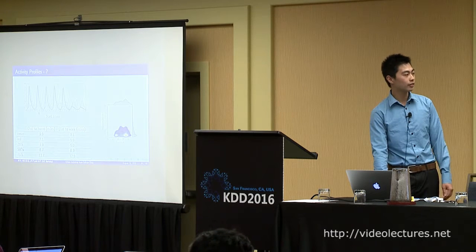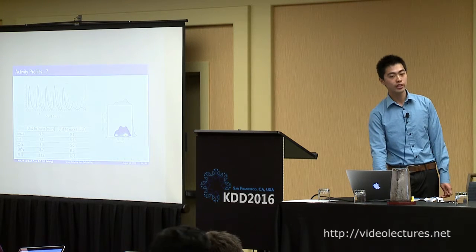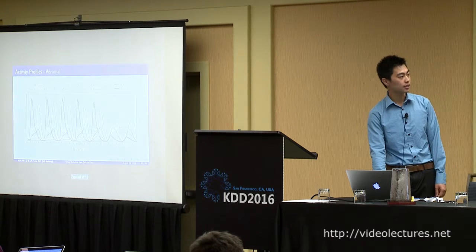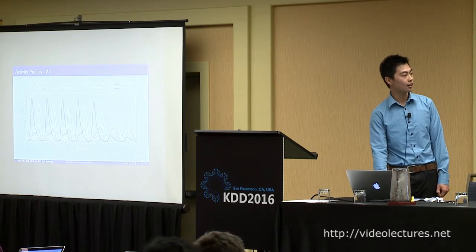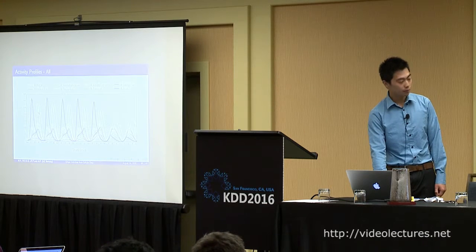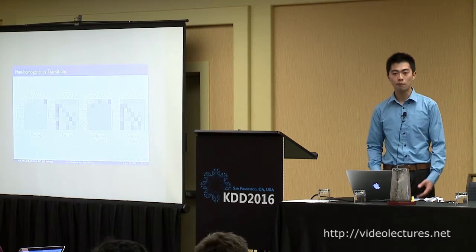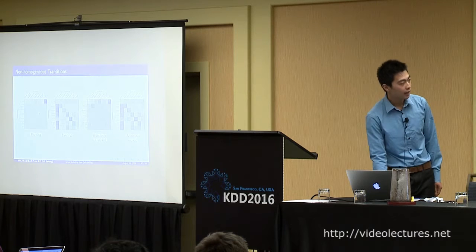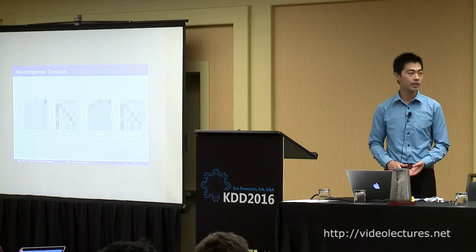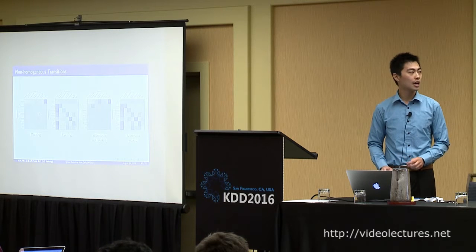Another strength of the LHMM model is that we can understand the non-homogeneous transitions given different contexts. For example, in the morning, the most significant transition is from home to work. In the evening, the most significant transition is from all other activities back to home. And if it's afternoon and the user has not been working at all, they are likely to go to work. But if they have been working for hours, they are likely to go back home.